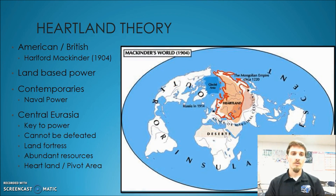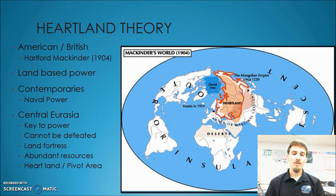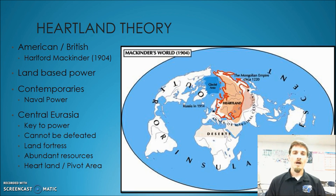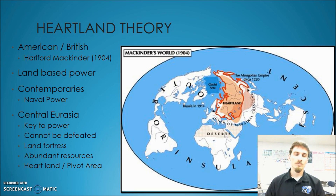The next theory we're going to look at is called the heartland theory. The heartland theory was developed prior to the organic theory, and this is more of a theory of global domination and global power. It was developed by a British man by the name of Halford Mackinder. One of the things that makes him different from some of his contemporaries is he believed in this idea of pivot areas and pivot points in history. He believed that up to the point he was looking at, the most dominant powers in the world had been naval-based powers, and that they were at a pivot point in history where eventually you'd see a transition to land-based powers being the most powerful countries in the world.